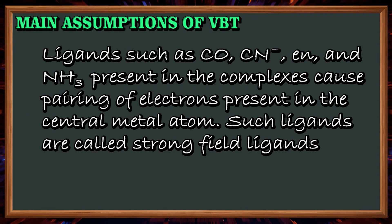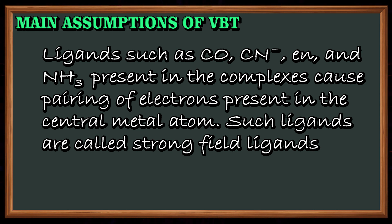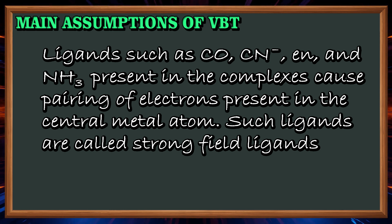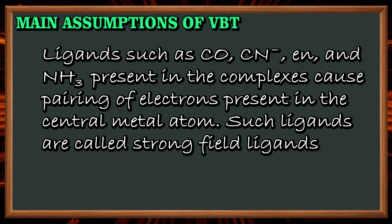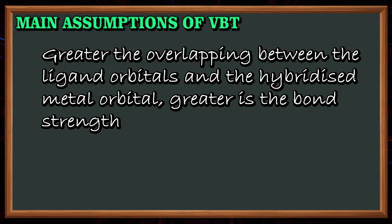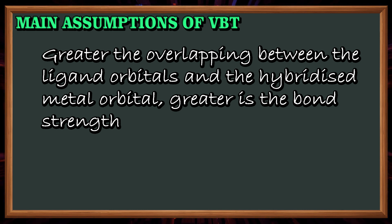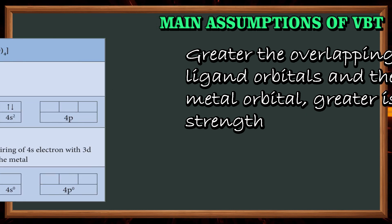Ligands such as carbon monoxide, cyanide, ethene, and ammonia present in complexes cause pairing of electrons present in the central metal atom. Such ligands are called strong-field ligands. Greater the overlapping between the ligand orbitals and the hybridized metal orbital, greater the bond strength.